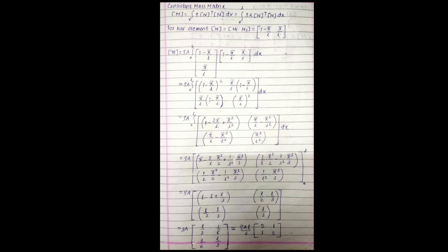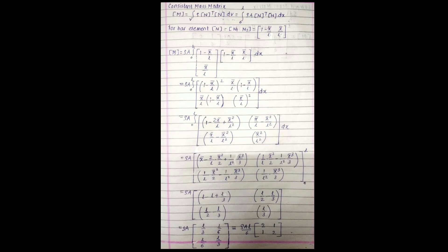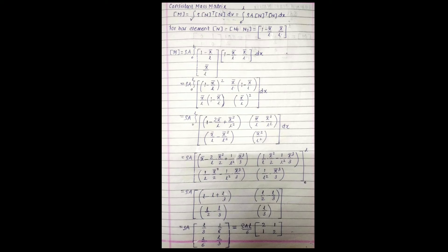For a bar element, N is the shape function matrix. For a linear bar element there are two shape functions: N1 = 1 − x̄/L and N2 = x̄/L. Substituting into the mass matrix formula: M = ρA ∫₀ᴸ [N^T · N] dx, where N^T = {1 − x̄/L, x̄/L}^T and N = {1 − x̄/L, x̄/L}.